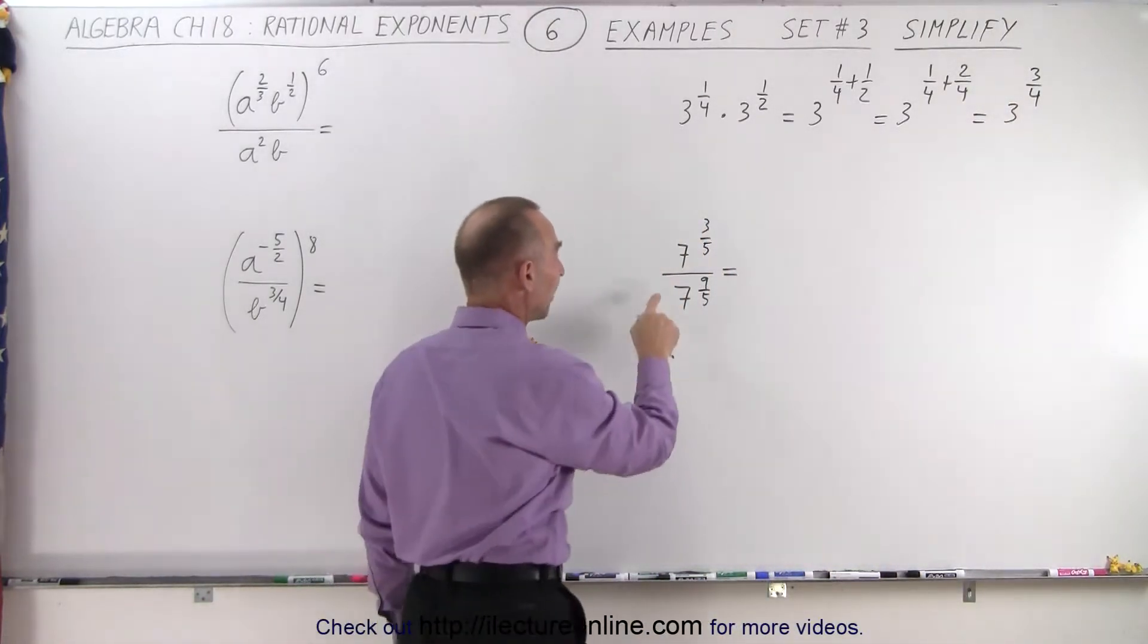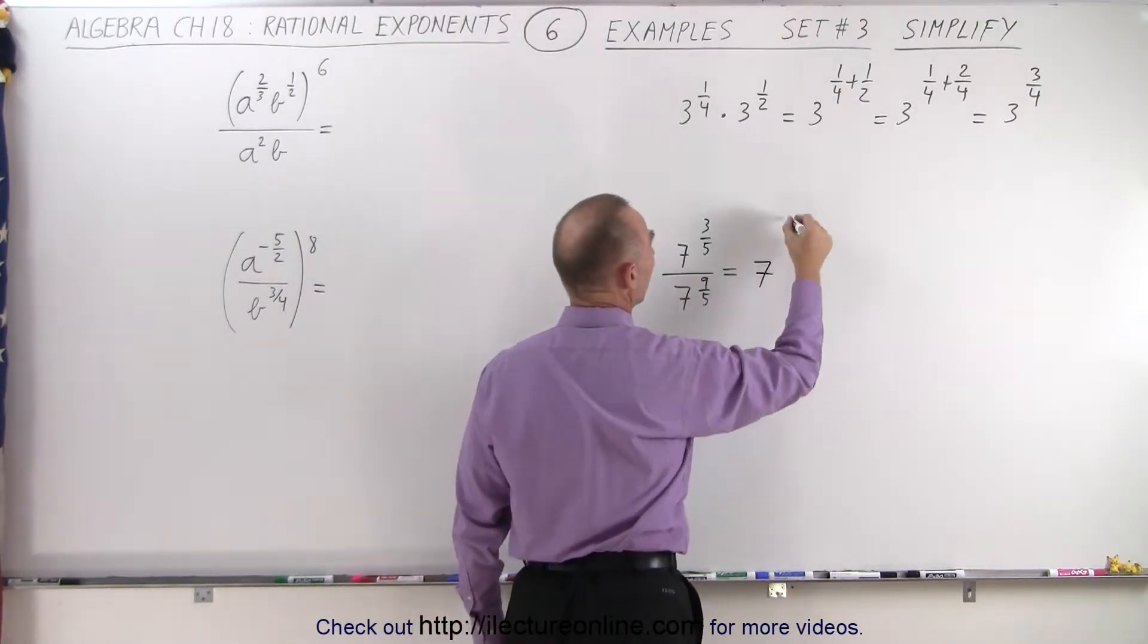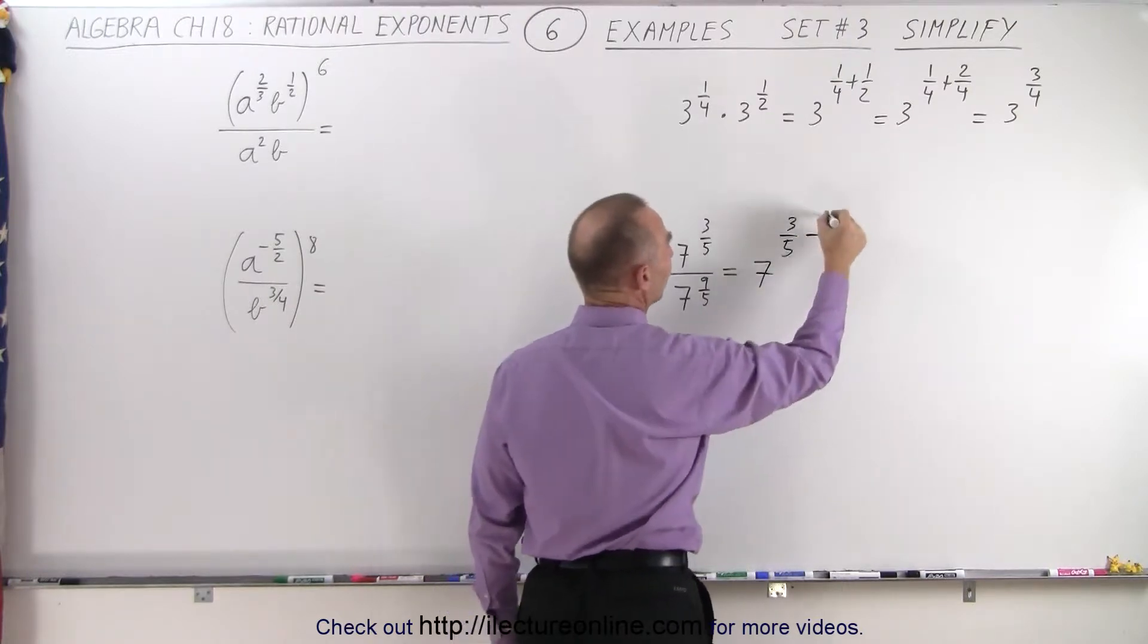On the next example, notice we're dividing here. So we have to subtract exponents. This becomes 7 to the 3/5 power minus 9/5.